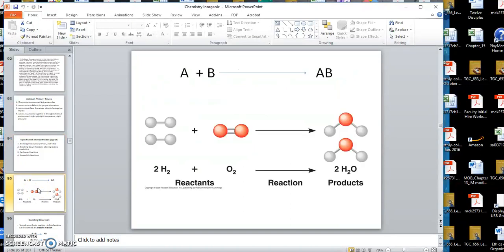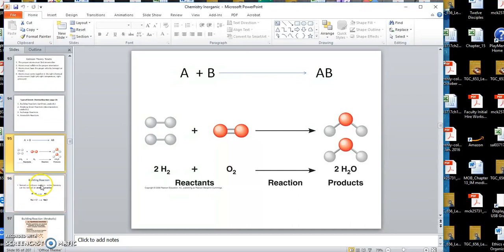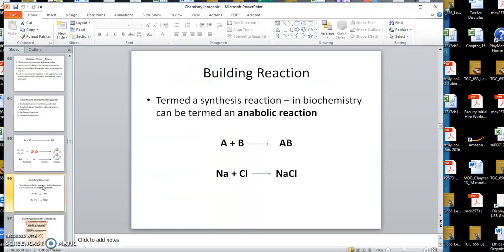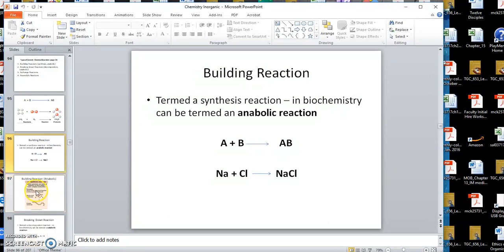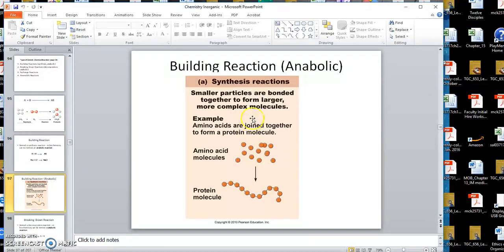Here would be a building reaction. A plus B going to AB. This reaction could be called a synthesis reaction. However, in biochemistry, it's called an anabolic reaction. So anabolism is a building reaction. Like if someone said anabolic steroids, the muscles would get bigger. Here's a building, making a protein from amino acids when we get into that.